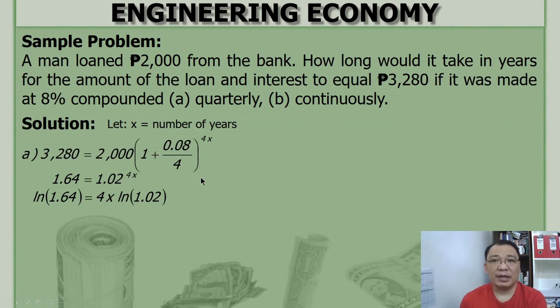Okay, property of logarithm. So the exponent can be written as coefficient. And to solve for x, divide by 4 LN 1.02 on the left side. So that would be x is equal to LN of 1.64 divided by 4 LN 1.02. And the answer is 6.245 years.